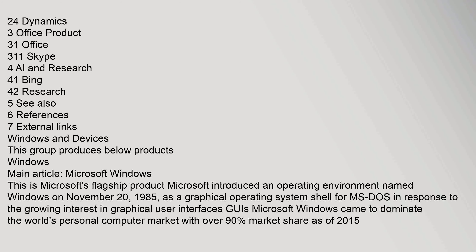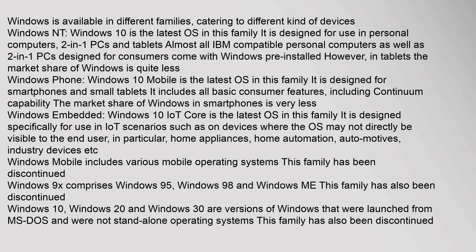Windows and Devices group produces Microsoft Windows, the company's flagship product. Microsoft introduced an operating environment named Windows on November 20, 1985, as a graphical operating system shell for MS-DOS, in response to the growing interest in graphical user interfaces (GUIs). Windows came to dominate the world's personal computer market with over 90% market share as of 2015.